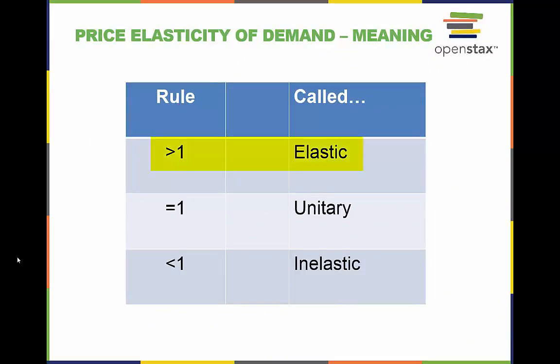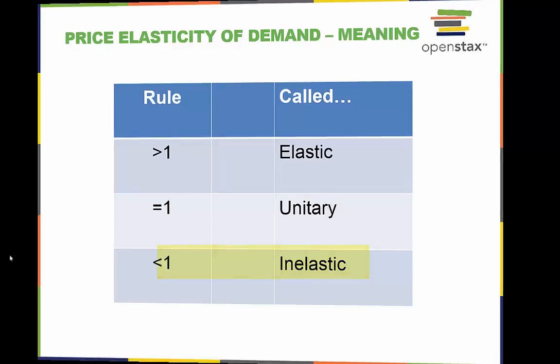If our price elasticity of demand coefficient is greater than 1, we can say that our product or service is elastic between the points on the curve used in the calculation. If it is equal to 1, then it is said to be unitary or unit elastic. If the price elasticity of demand coefficient is less than 1, then it is considered inelastic.